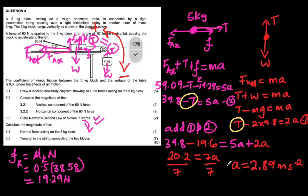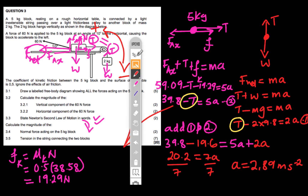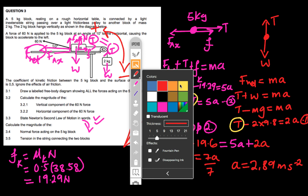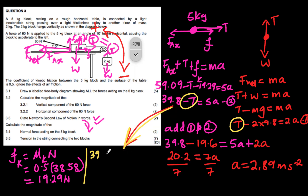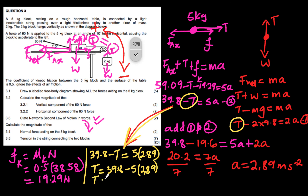Substituting a = 2.89 into Equation 2: 39.8 − T = 5 × 2.89 = 14.45, therefore T = 39.8 − 14.45 = 25.35 newtons. That is our final answer for the tension in the string.